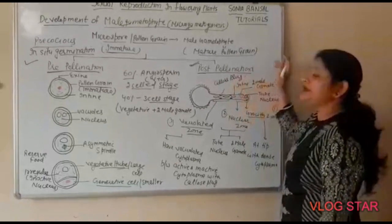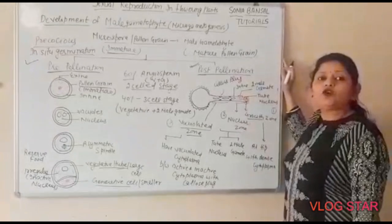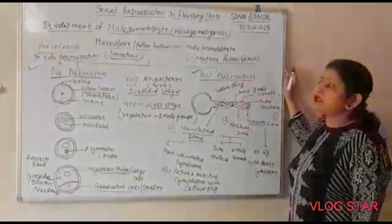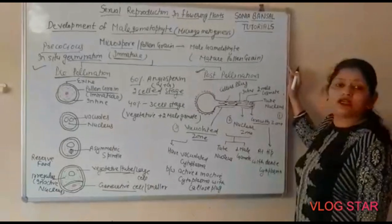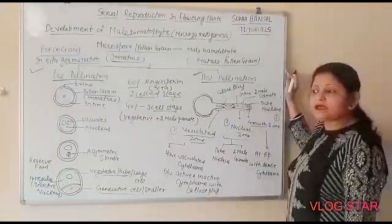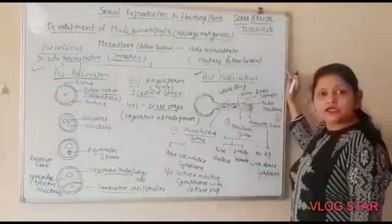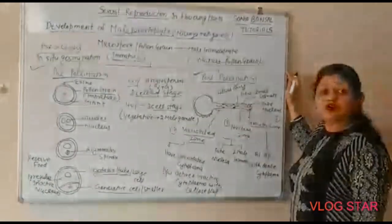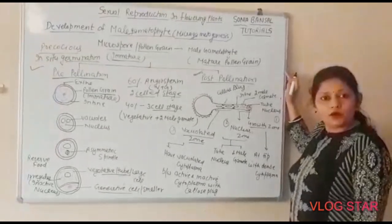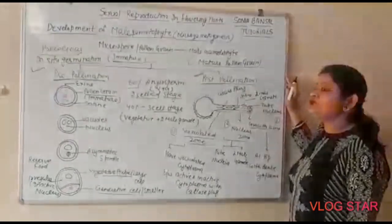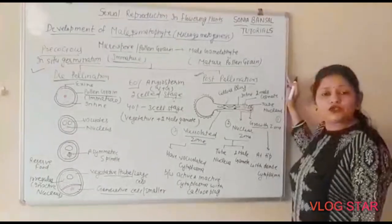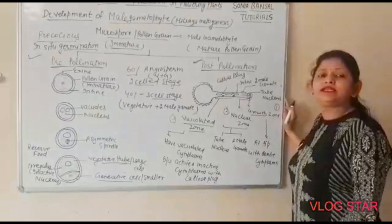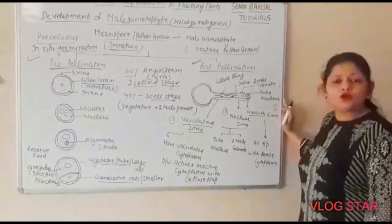This development occurring after pollination is called post-pollination development. The development of the male gametophyte involves two steps: pre-pollination and post-pollination. Pre-pollination is called precocious because it occurs inside the pollen sac. In 40% of angiosperms, pollen grains are released at the three-cell stage, and in 60% they are released at the two-cell stage.